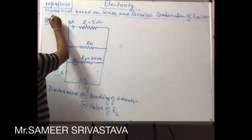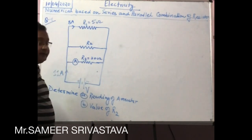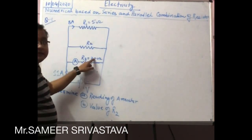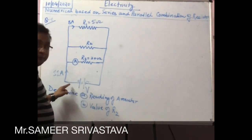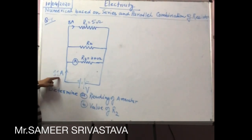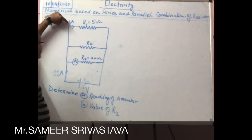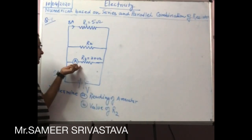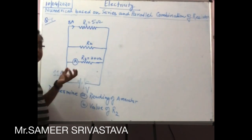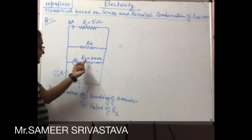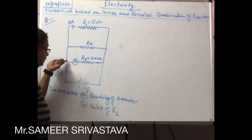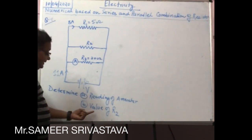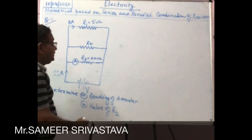For the fourth question, I am taking a parallel combination where R1 is 5 ohm and R3 is 20 ohm. The current from the supply is 11 ampere and the current through R1 is 8 ampere. We have to find the reading of the ammeter — how much current flows through R3 — and the value of R2.